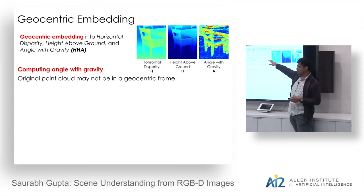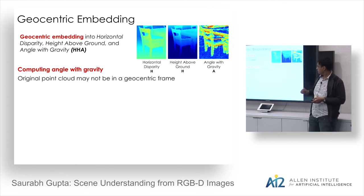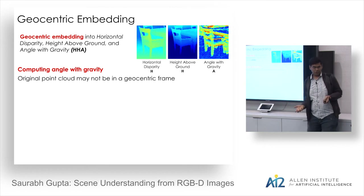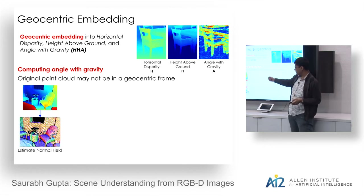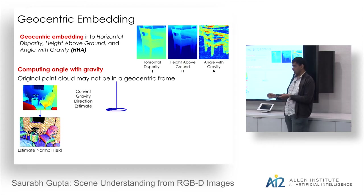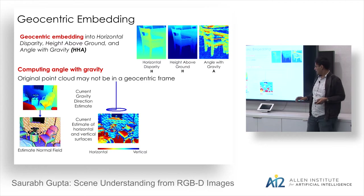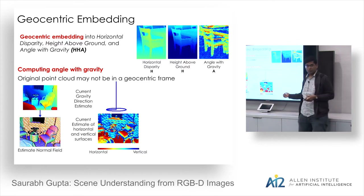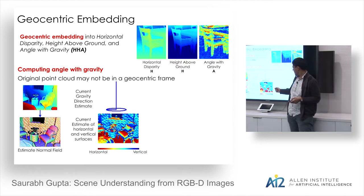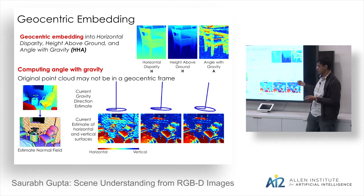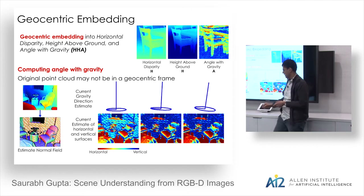To compute height above ground and angle with gravity, we need to find the geocentric coordinate frame. Our algorithm estimates the surface normal field, starting with the y-axis as the initial gravity direction, then identifies horizontal and vertical surfaces — red pixels are horizontal, blue are vertical. We re-estimate the gravity direction from these and iterate five times until convergence, achieving very accurate gravity estimation.